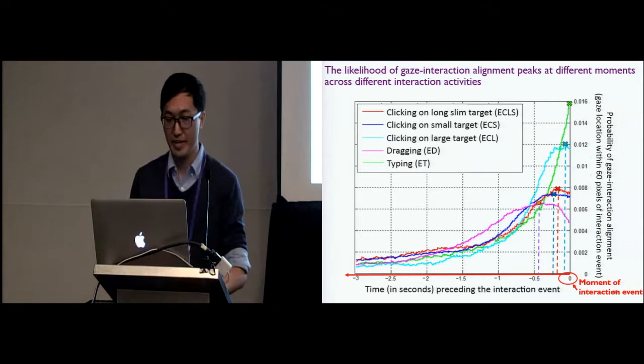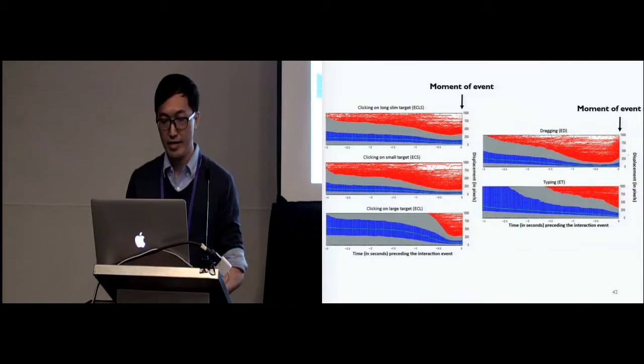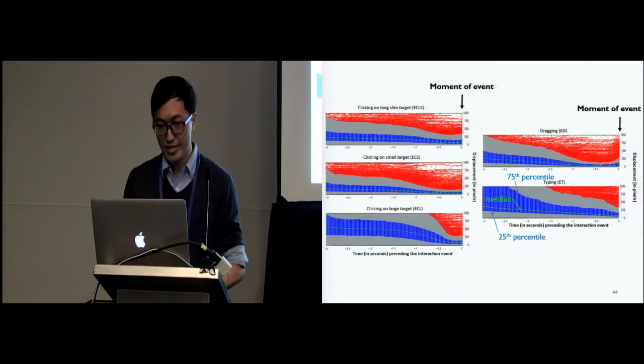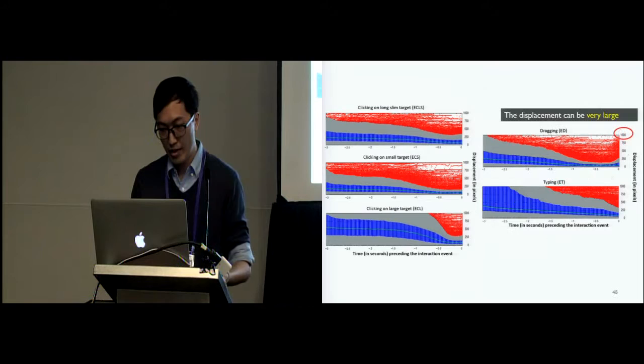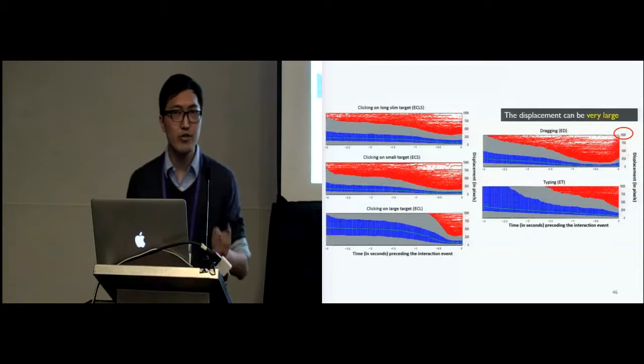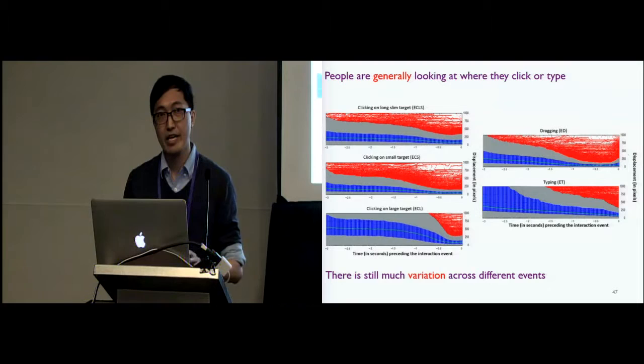Let's look into the distribution of all the instances. Again, X axis shows the time preceding the interaction event. Y axis shows the distance between the gaze and the interaction. The green line shows the median. The blue region shows the data from 25th to 75th percentile, and the gray region from first and 99th percentile. The red points indicate the outliers. We can see that the gaze interaction distance at the event moment can be very large, reaching 1,000 pixels here. And that is basically two-thirds of our screen width. So this result tells us that although the user are generally looking at where they click or type, there is much variation across the individual events.